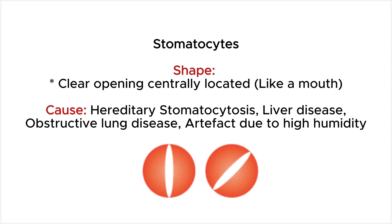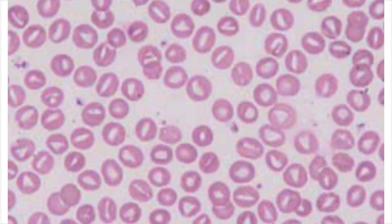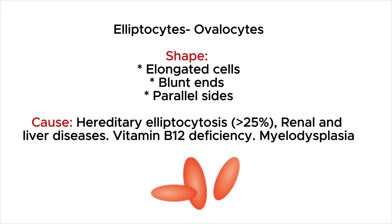Elliptocytes and ovalocytes — these terms are interchangeable. The cells are elongated with blunt ends and parallel sides. These changes are seen in renal and liver diseases, vitamin B12 deficiency, and myelodysplasia. If microscopic examination shows more than 25 percent elliptocytes, it is called hereditary elliptocytosis.